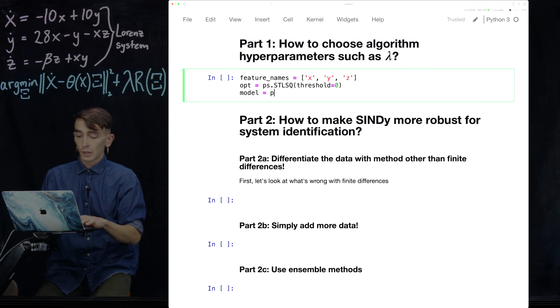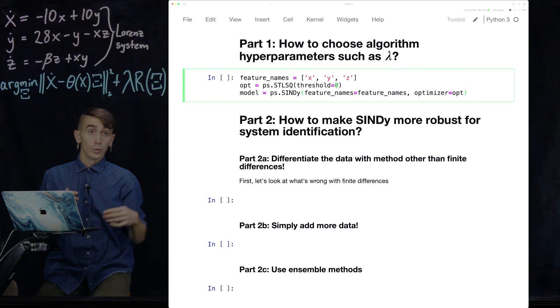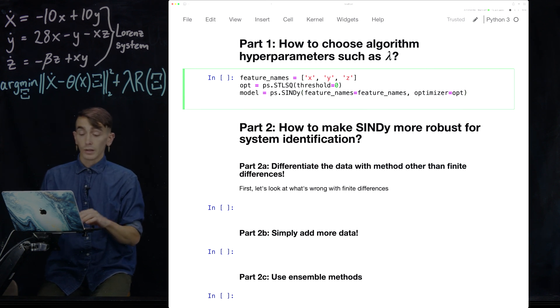And then I'm going to build a SINDY model. So this is pretty easy in the PySINDy code. I'm going to pass the feature names so that it knows what to call things. And I'm also going to pass this optimizer that I just defined with this lambda equals 0. So we're not even doing sparse regression. This term is just gone. We're just doing a normal least squares regression. And so that makes the SINDY model, but we haven't actually fit it to data yet.